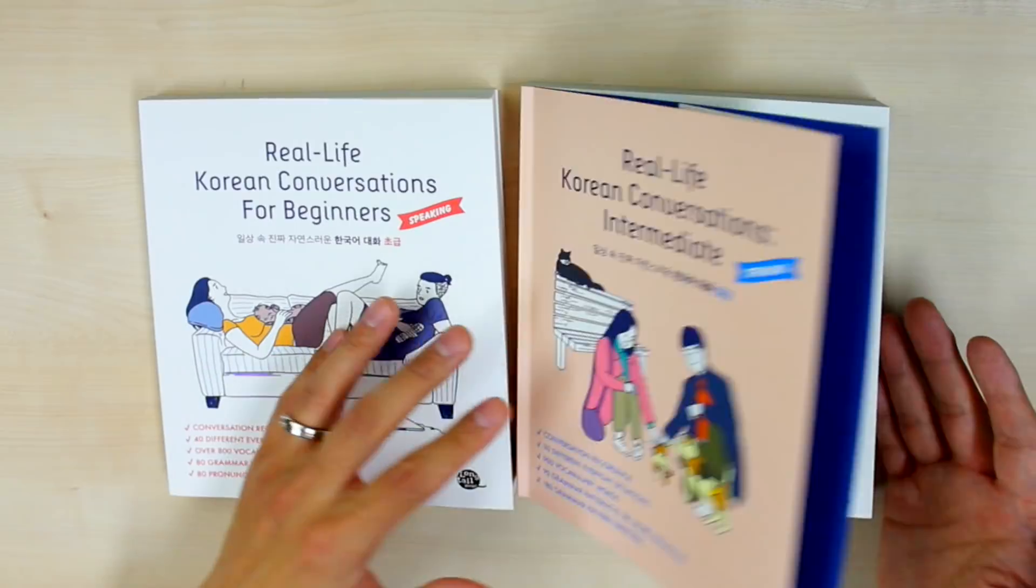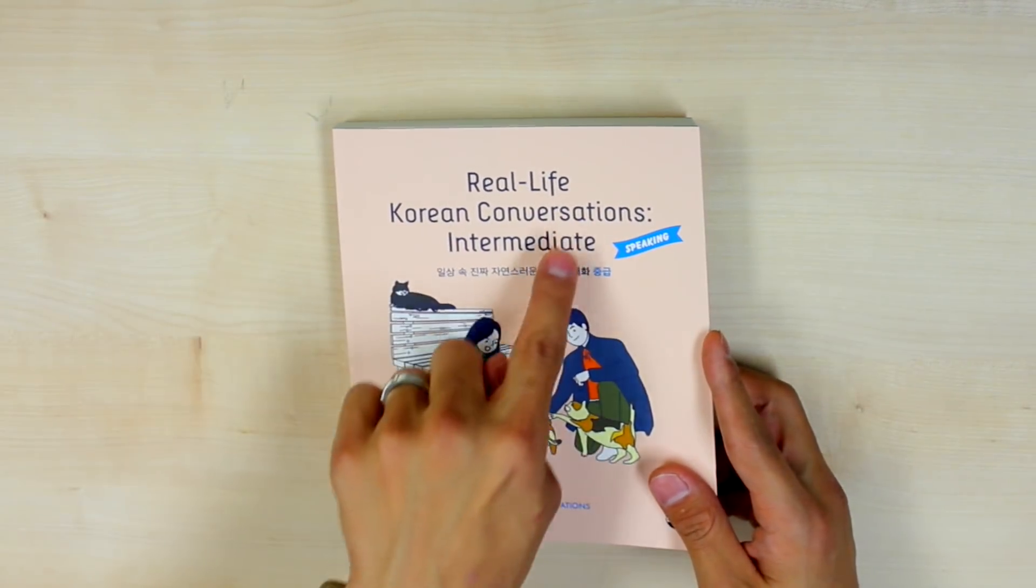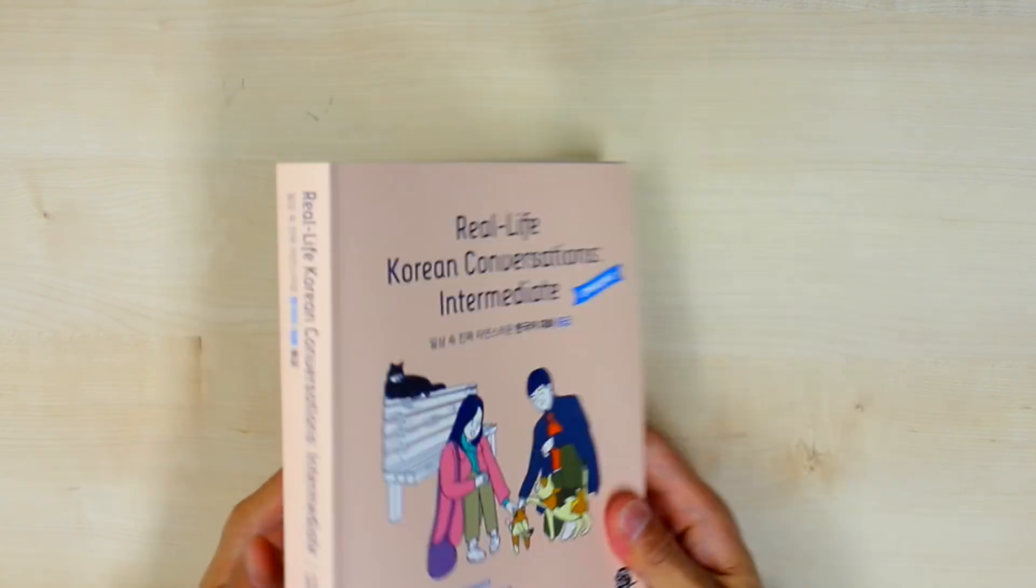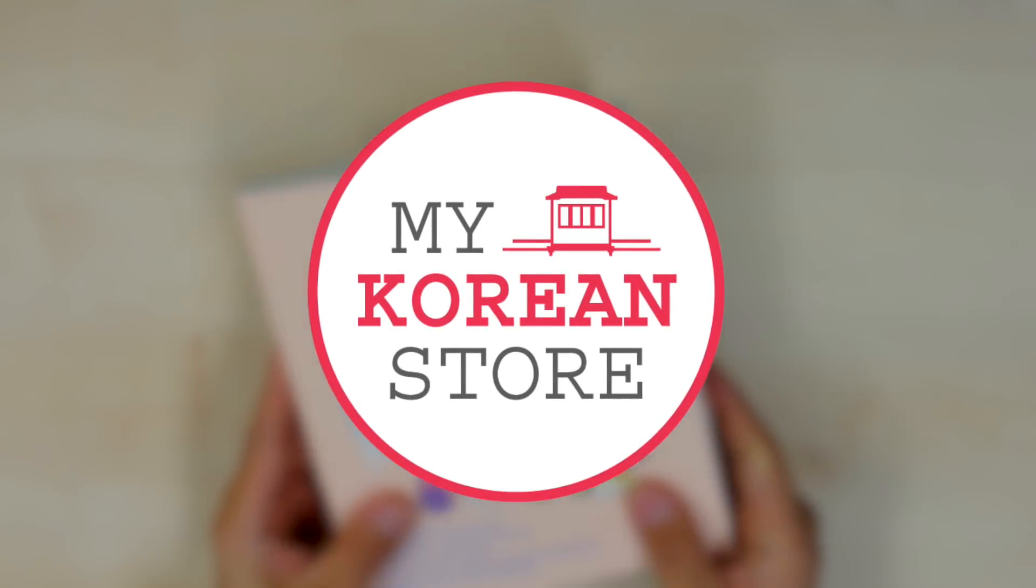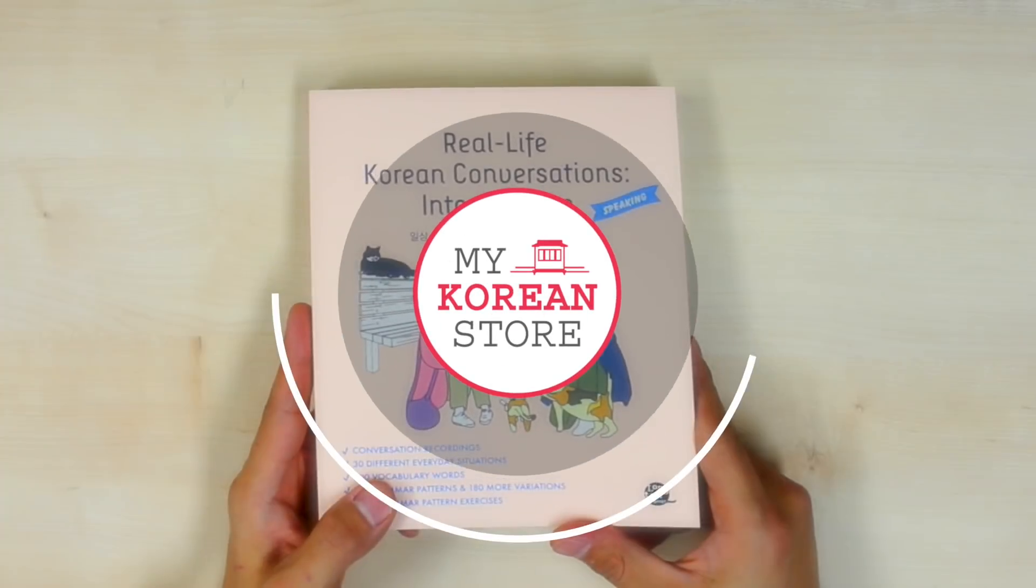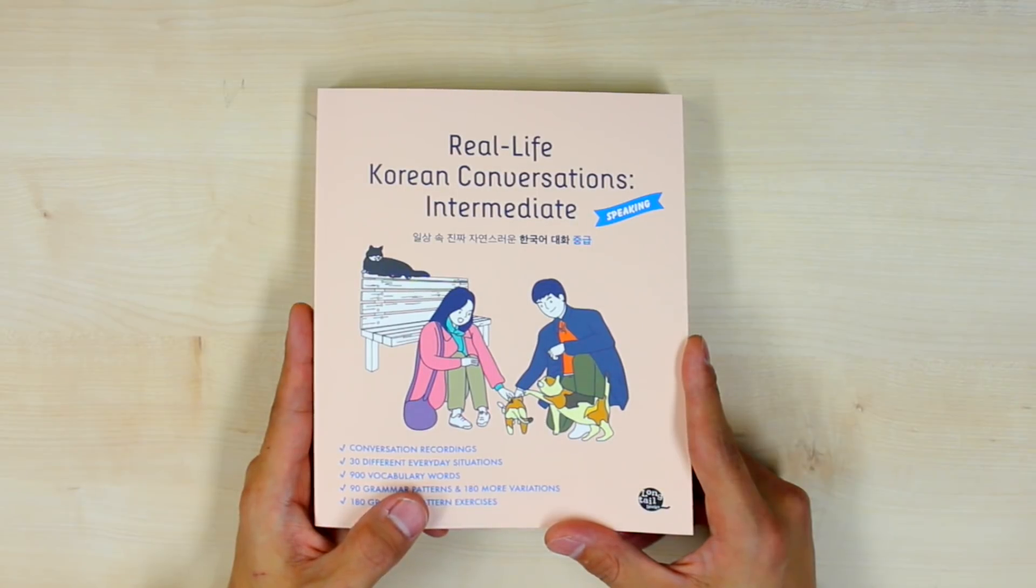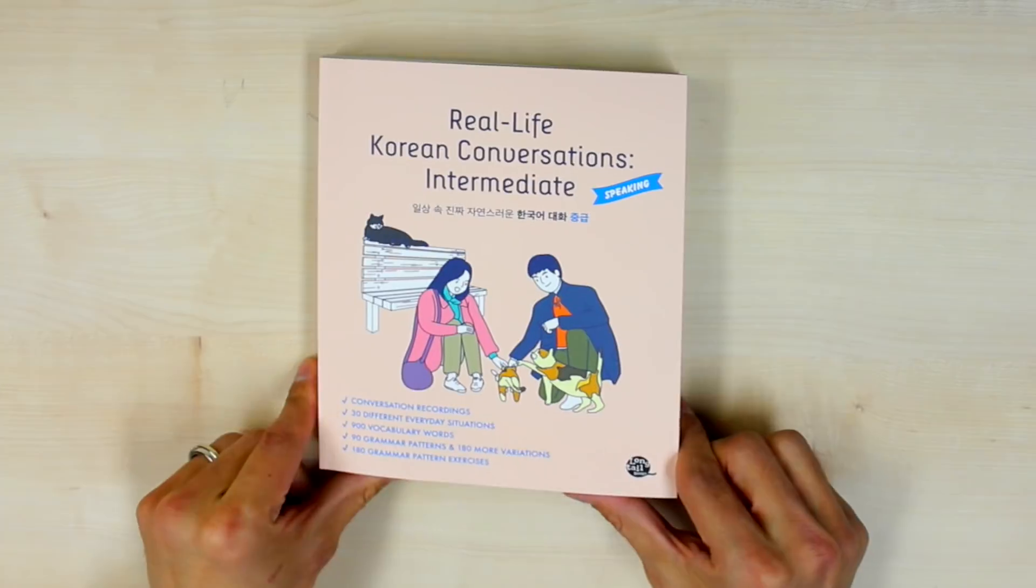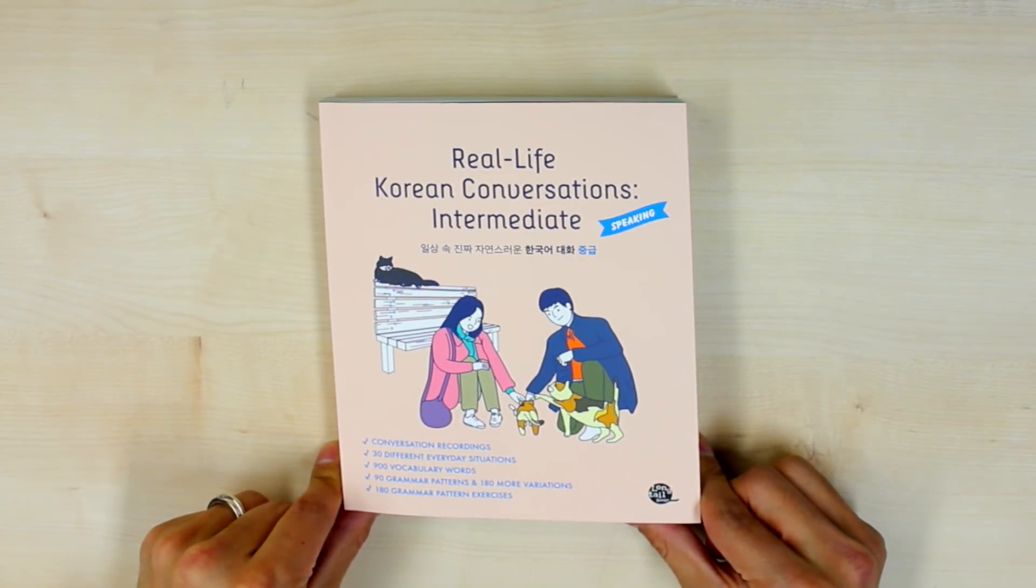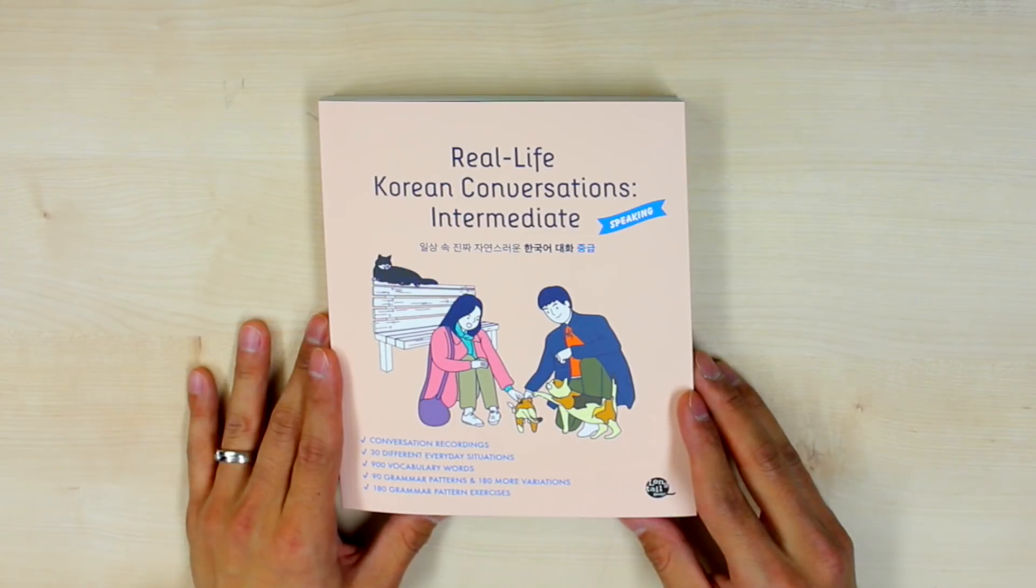So there you go. So that is Real-Life Korean Conversations Intermediate. And yeah, it is already available on our online bookstore at mykoreanstore.com and it will be and it should be already by now available in major bookstores throughout Korea, including the Kyobo bookstore. All right. So that is it. Thank you so much for watching and thanks for giving us the opportunity to help you learn Korean and I will see you in the next video. Bye.